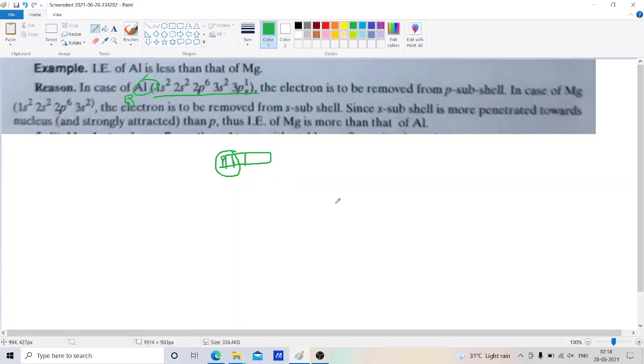Let's consider this is the nucleus. From the nucleus, we have 1s, then 2s, then 3s, and then 3p. This is the outermost electronic configuration. The electron is in 3p, and we have to remove the electron from 3p.